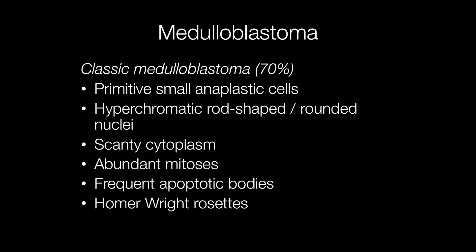Histological features of the classic medulloblastoma, which accounts for around 70% of cases, include primitive small anaplastic cells with hyperchromatic rod-shaped or rounded nuclei, scanty cytoplasm, abundant mitotic figures, frequent apoptotic bodies, and in areas Homer Wright rosettes. Homer Wright, incidentally, was an American pathologist.